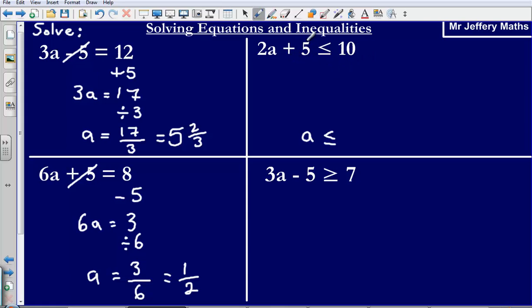I've got plus 5 so what I'm going to do is I'm simply going to subtract 5. When I subtract 5 that gets rid of plus 5. So what I'm left with is 2A is less than or equal to 10.